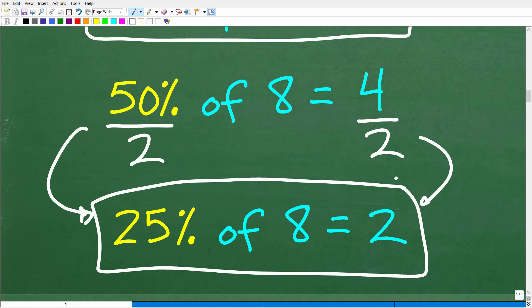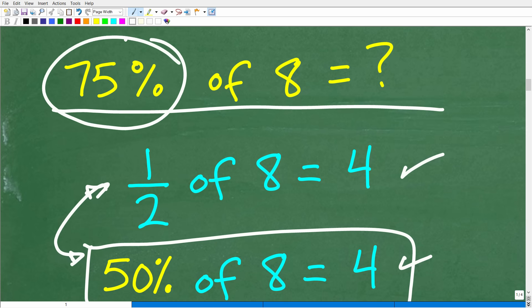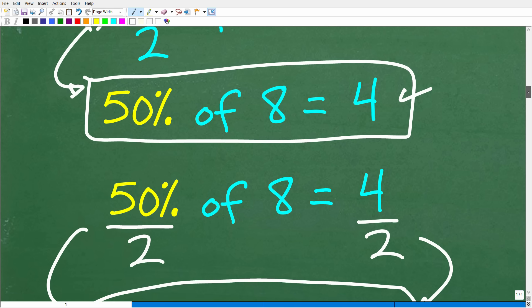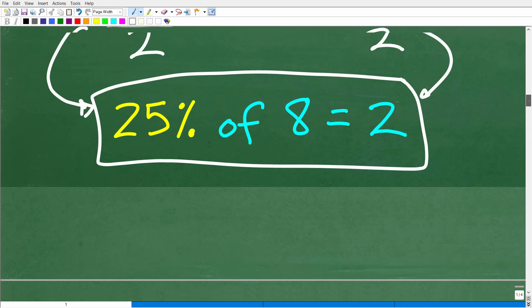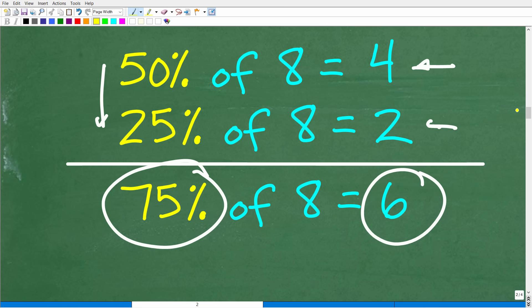You can break down percentages in your brain like this because we're trying to figure out what 75% of eight is. So you might be saying, all right, 50% of eight is four, 25% of eight is two. If I add these together, 75% of eight is four plus two is six. Again, all different sorts of ways to figure this out. We haven't even answered the question, but the first part to get the answer is figuring out what 75% of eight is.